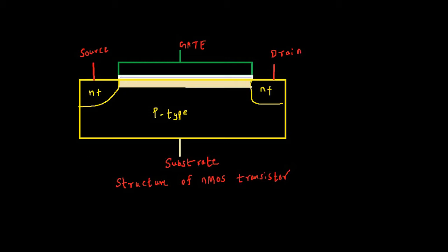The four terminals are: gate, source, drain, and substrate. NMOS is constructed using a P-type substrate. In that P-type substrate, we have two N+ regions formed. One N+ region is called source and the other is drain.